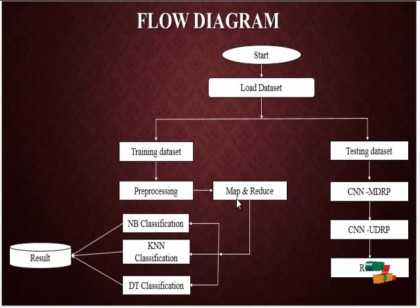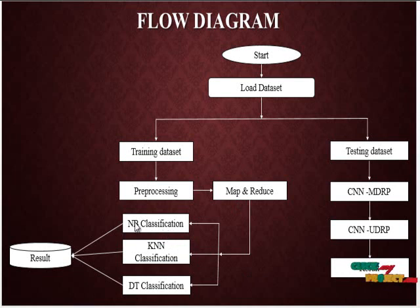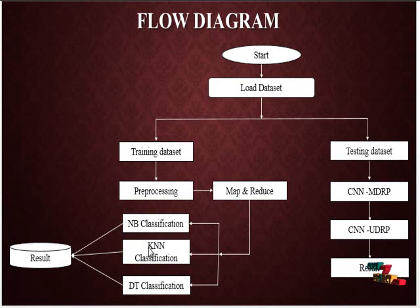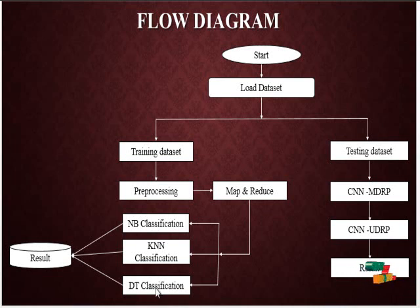The next process is map and reduce. The dataset is uploaded on the HDFS server, then map and reduce is applied for efficient results. After that, three types of classification are performed: Naive Bayes classification, KNN classification, and Decision Tree classification. In Naive Bayes we find the probabilistic value; in KNN we calculate the nucleus distance of the dataset; and in Decision Tree we create the tree classification.